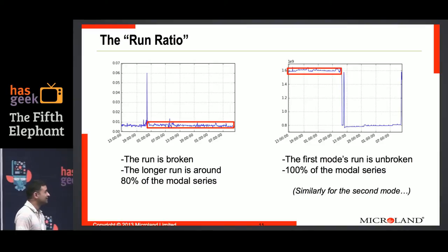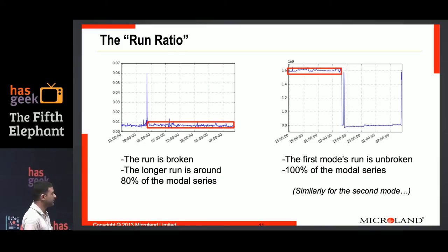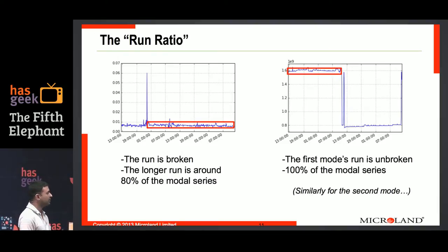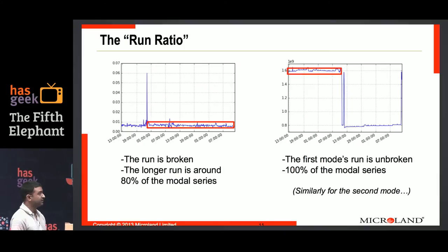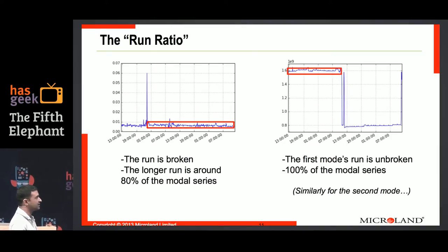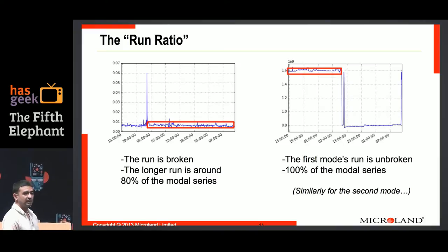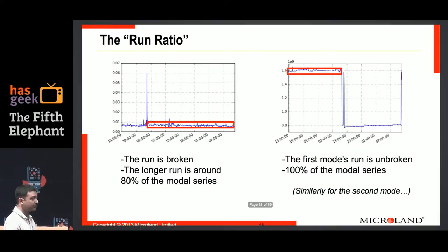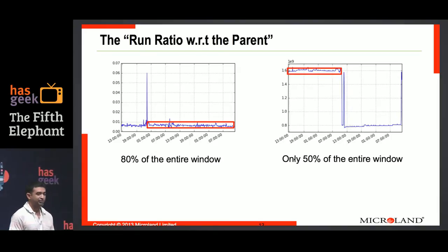My second feature is what I call the run ratio. The run ratio looks at the longest unbroken string of values that lie in that mode — the longest consecutive run. For the left graph this is around 80%; there are two runs, and I take the bigger one, so the run ratio of this mode is 0.8. On the right-hand graph, the run ratio of the upper mode is 100% because all occurrences appear in a consecutive run, and the same for the lower mode. I have another statistic which looks at the proportion of the longest consecutive run with respect to the entire window.